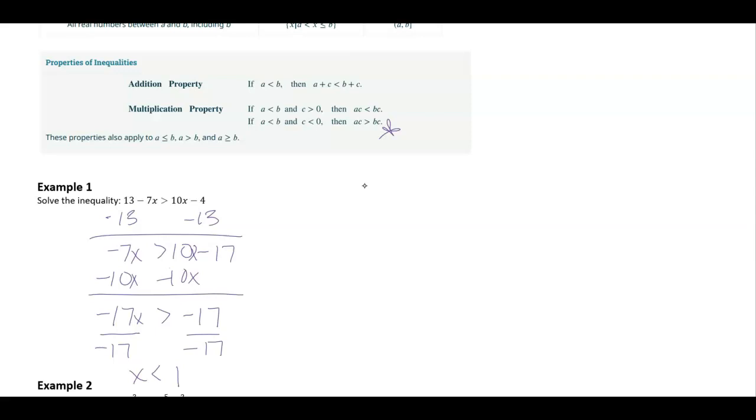So this would be our inequality notation. I need numbers less than one, so my interval notation would look like this: negative infinity to one. And on a number line, say this is zero and this is one, I would do an open circle at one and then shade to the left hand side.